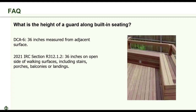What's the height of a guard along built-in seating? The DCA-6 requires guards to be 36 inches in height measured from the adjacent surface. The 2021 IRC has relaxed its requirement so that 36-inch guard height is measured from the walking surface. The DCA-6 maintains the 36 inches to prevent falling from seats and is considered a best practice, since anyone with young kids who love to climb may certainly disagree that a built-in bench is not a walking surface.